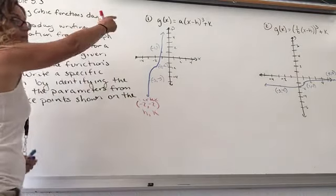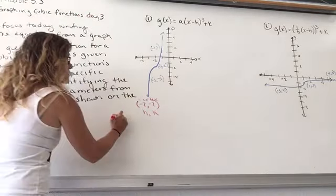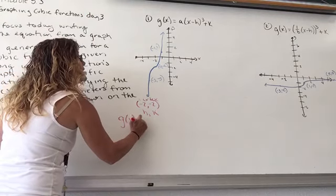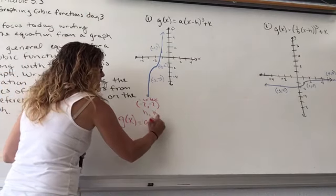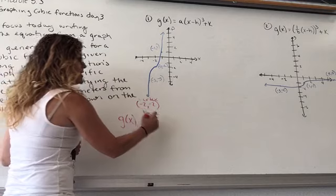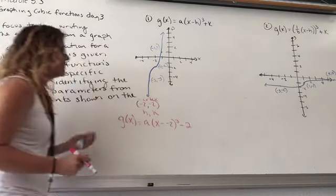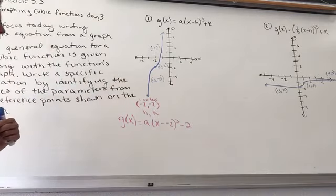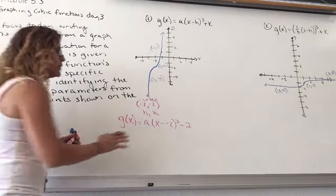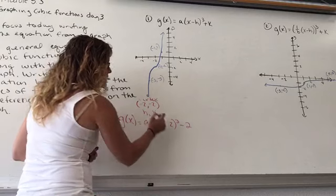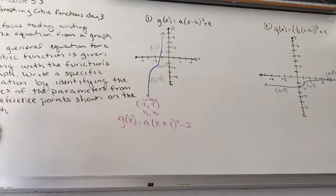So we are going to plug those values into that equation. G(x) = A(x - (-2))³ - (-2). That double negative, we need to make sure we take care of that. It does become a positive.